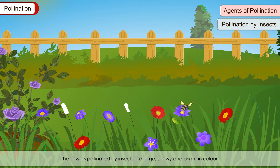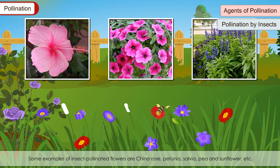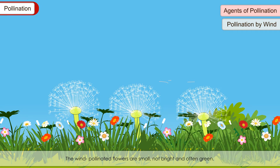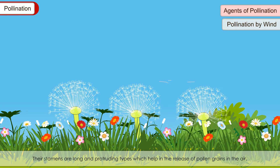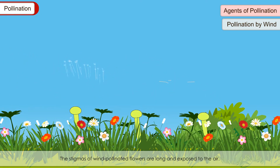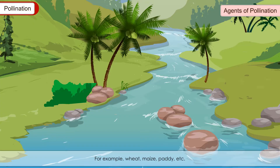Pollination by insects: Flowers pollinated by insects are large, showy and bright in colour. They produce fragrance to invite insects and produce nectar as food for them. The pollens of insect-pollinated flowers are sticky or spiny, clinging to the bodies of insects. Examples include China rose, petunia, salvia, pea and sunflower. Pollination by wind: Wind-pollinated flowers are small, not bright and often green. They produce no fragrance or nectar, their stamens are long and pendulous to release pollen into the air, and their stigmas are long and exposed. Examples include wheat, maize and paddy.